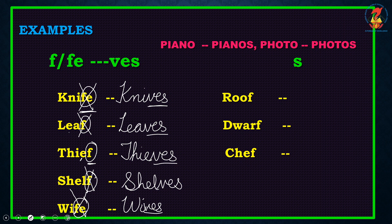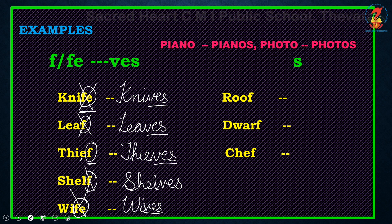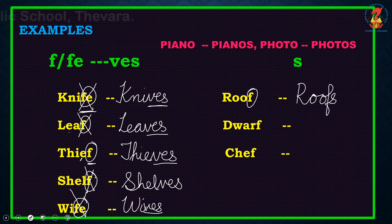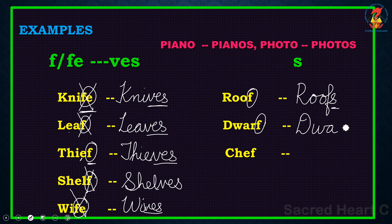Glass — it has SS at the end, so what did we do? We added ES to make it a plural form: glass became glasses. Then we have bus — bus has one S at the end, so in that case also we write ES to make it plural: bus became buses. Next, mango — you have O at the end of the word, so here too we write ES.